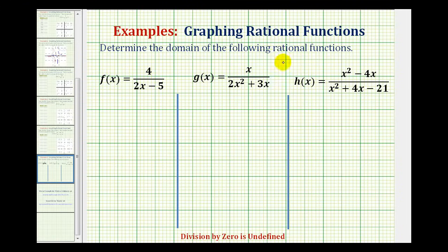We want to determine the domain of the following rational functions. To determine the domain of a rational function, we want to find the x values that we must exclude from the domain. Since a fraction bar represents division and we know that division by zero is undefined, we want to set the denominator equal to zero and solve for x. This will tell us which values we must exclude from the domain.